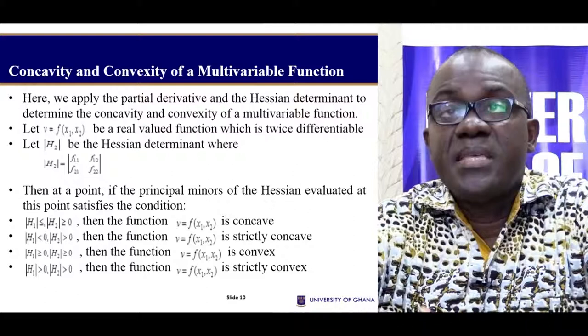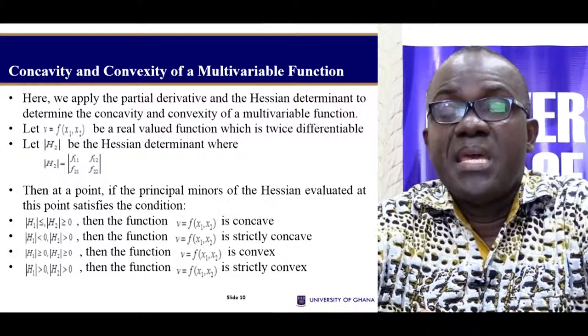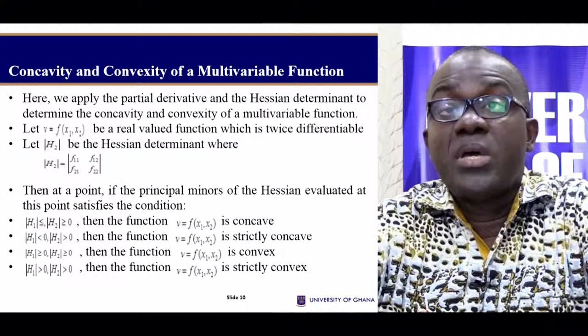What this determinant is: we just have to take the differentials of the function with respect to the first variable — the second order differentials — and then with respect to the second variable. Here we have the cross partials. We put it in this determinant and then we evaluate this determinant at the point where we are supposed to investigate the concavity or convexity of that function.